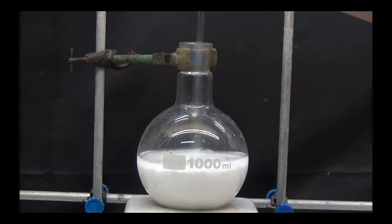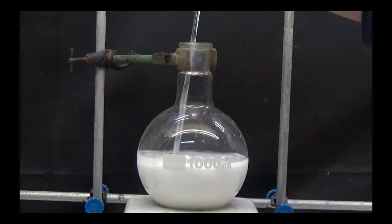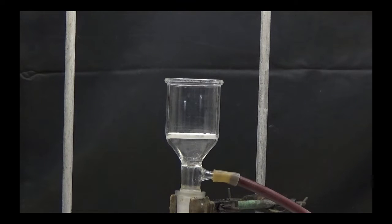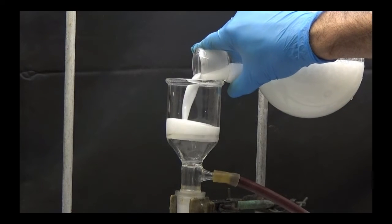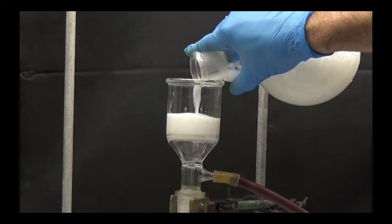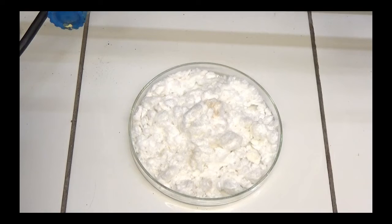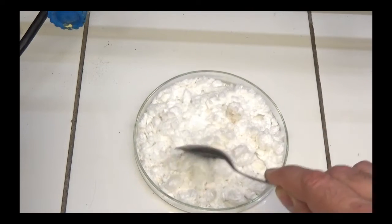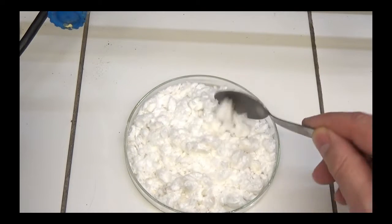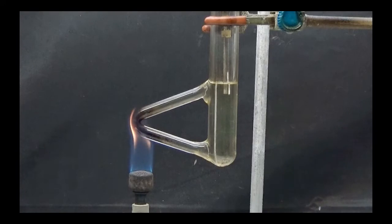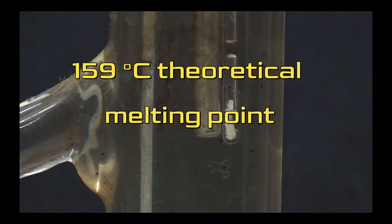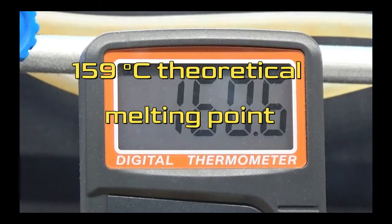100ml of additional water was added to disperse and collect the solid through suction. Dry in the oven at between 50 and 80 degrees. We determine the purity by determining the melting point, which must be 159 degrees.